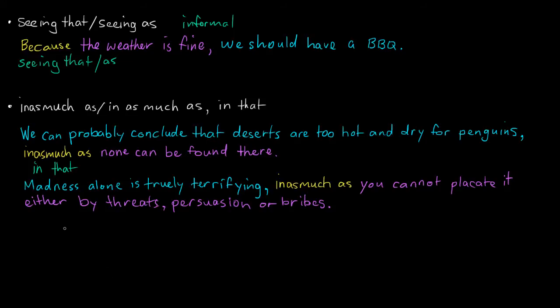And a final example here is: Madness alone is truly terrifying, inasmuch as you cannot placate it either by threats, persuasion, or bribes. And to placate means to pacify it or make it peaceful. And bribes, obviously, when you give money sort of in an immoral context. So there you go - they're saying it's truly terrifying, madness. And why? Because you can't make it peaceful by these means.